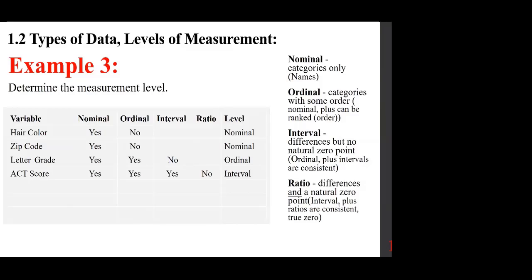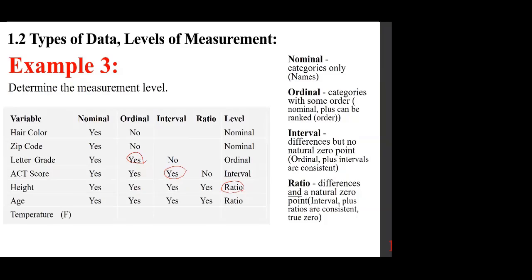When looking at a table of levels of measurement, what really matters is the highest level that applies. For height, the highest level is ratio. Height of zero means nonexistence. Age is the same — age of zero means nonexistence. Temperature is interval: if it's 30 degrees versus 15 degrees, it doesn't mean it's twice as hot; you can't assume that. And when it's zero degrees, it doesn't mean lack of heat. Based on what statisticians believe, temperature is an interval level of measurement.